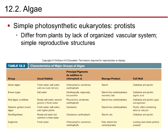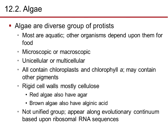Algae are different from fungi — they're photosynthetic eukaryotes, sometimes called protists. They differ from plants by the lack of an organized vascular system and have a simple reproductive structure. Types include green algae, brown algae, red algae, diatoms (golden brown algae), dinoflagellates, and euglenoids.